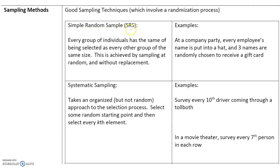First, we have a simple random sample. In this case, every group of individuals has the same chance of being selected as every other group of the same size. This is achieved by sampling at random and without replacement.